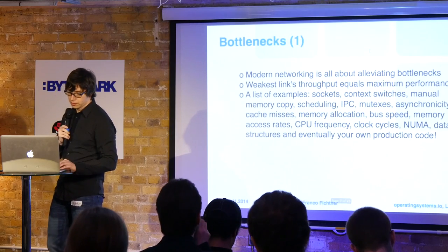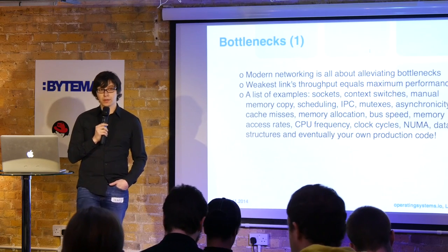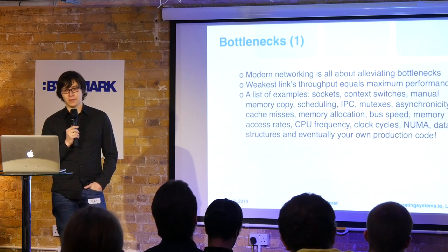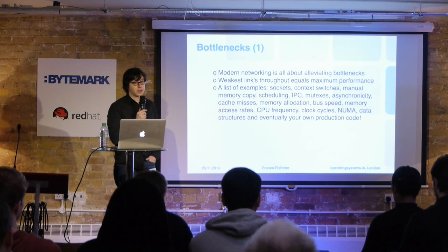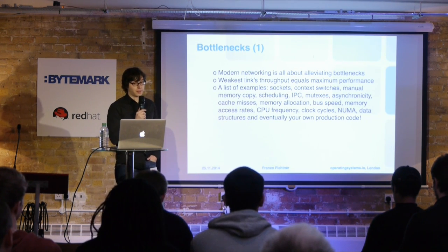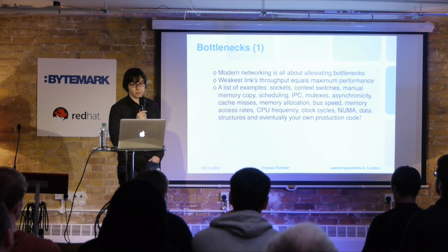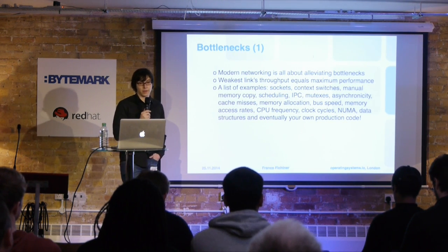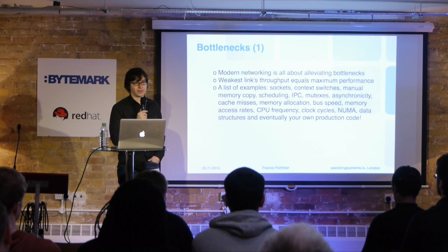Modern networking is all about alleviating bottlenecks. The weakest link is always the maximum performance of your system — you have to find it, identify it, and fix or circumvent it. Examples of bottlenecks include: the socket API, context switches (which are not cheap), manual memory copies, scheduling, IPC, mutexes, cache misses, memory allocation, bus speeds, memory access rates, and CPU frequency. Basically everything — and eventually even your own production code will be too slow.